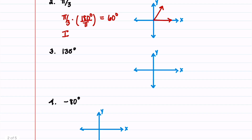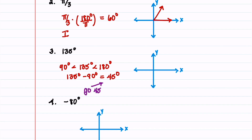Our third angle is 135 degrees. Let's start by noting that 135 degrees lies between 90 degrees and 180 degrees. If we take 135 degrees and subtract 90 degrees, we end up with 45 degrees. So we know that we have to go 45 degrees past 90 degrees when we draw this angle. We can also note that this angle is in our second quadrant. So to draw this angle, we'll start with the initial side along the x-axis, and then we'll go 45 degrees past 90 degrees.